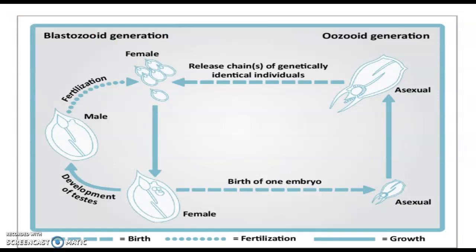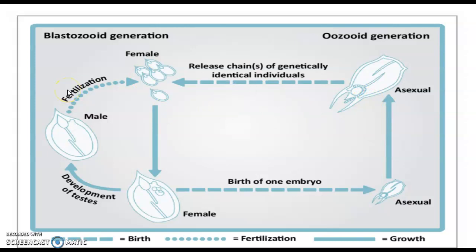Later, it gradually develops the stolon and repeats the sexual phase of reproduction. In summary, the asexual oozooid forms the solitary form; the stolon breaks into small blastozoids which develop into gonozooids. The female develops first, then the testes. Male and female gametes fuse internally, the zygote develops in a uterine sac, and the resulting oozooids move out into the free water column to continue the cycle. Thank you.